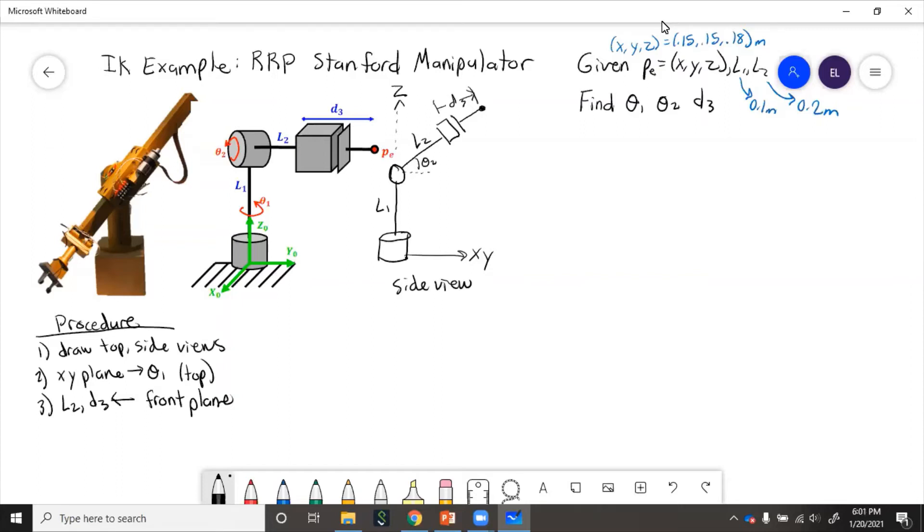From the top view, from a bird's eye view, we'll have joint one looking down at it, then joint two, and then the arm will come out. This is x, this is y. This angle here is theta1, and we know this point is x, y, z.